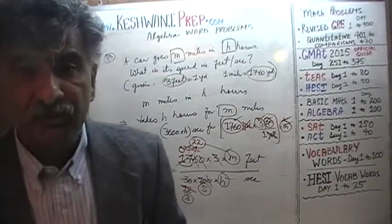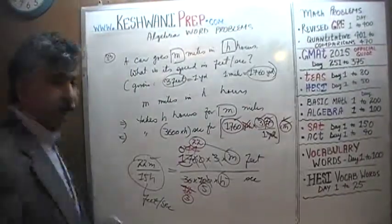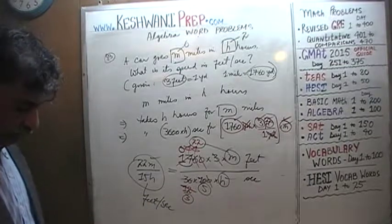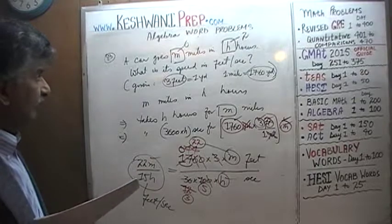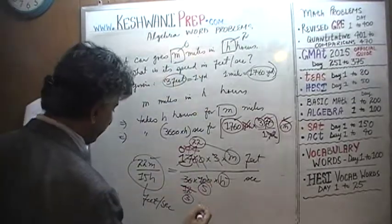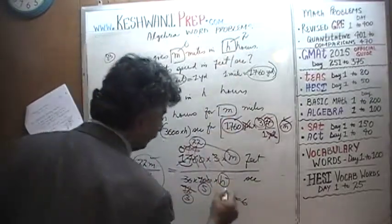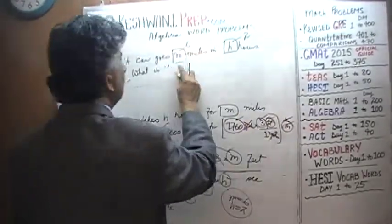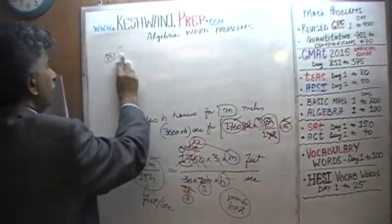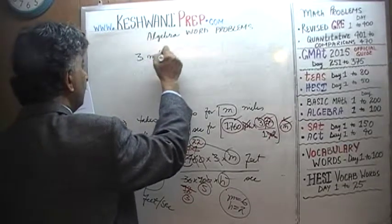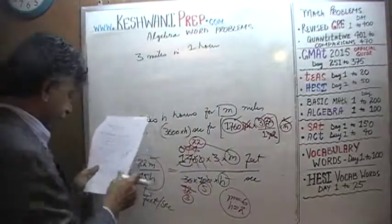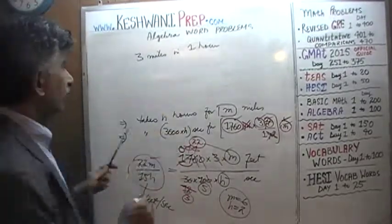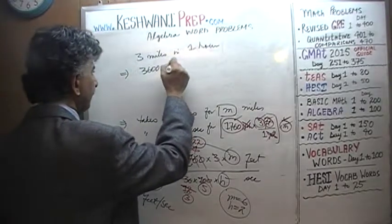Let's say the car can go 6 miles every 2 hours — so we plug in 6 for m and 2 for h. 6 miles every 2 hours is 3 miles every hour. We need to bring the hour to one side, so: we are taking 3600 seconds, which is 1 hour, for 3 miles. We need to convert those 3 miles into feet, so we multiply by 3 times 1760.